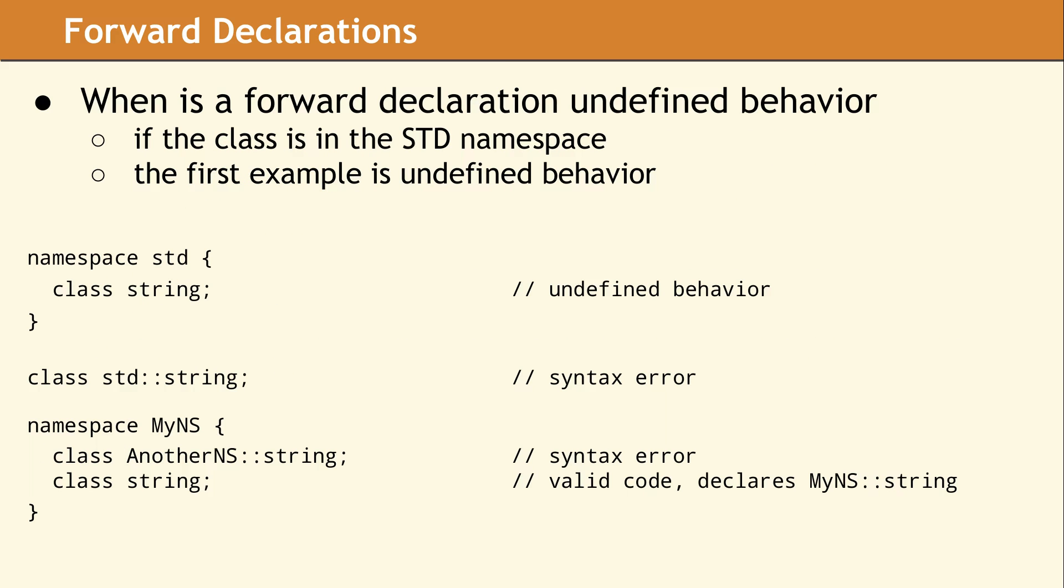The first block of code here attempts to forward declare the class string in the std namespace. This is syntactically valid code and the namespace name will be prepended to the class, so this will yield a forward declaration of std string. However, you are not allowed to forward declare anything in the std namespace, so this results in undefined behavior. The second example is a syntax error, since you are not permitted to specify a scope in the body of a forward declaration. The third example is also a syntax error for the same reason. The last example is valid code and will forward declare a class named string in the namespace myns.